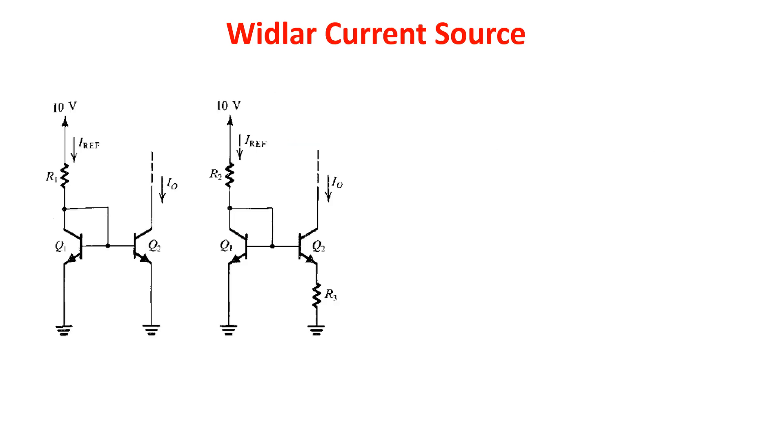Now, let's see an example taken from the book Microelectronics Circuits by A. Sedra and K. Smith to better appreciate the working of the Widlar current source. Let's say we want to generate a current of 10 microamps with a classical current mirror on the left and with a Widlar current source on the right.